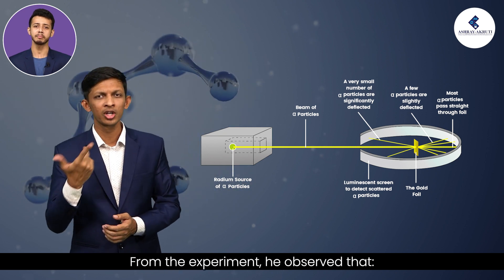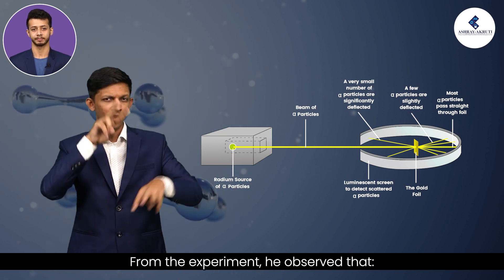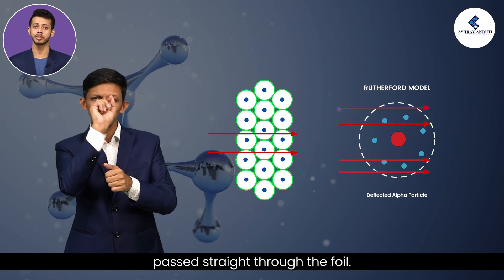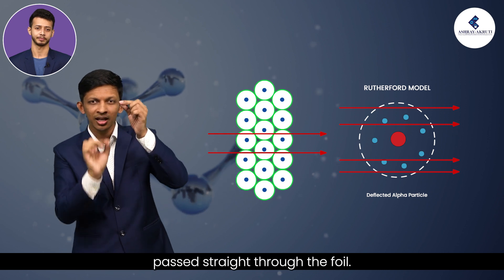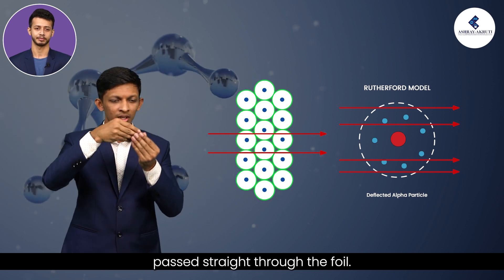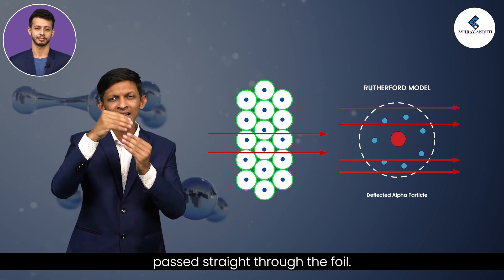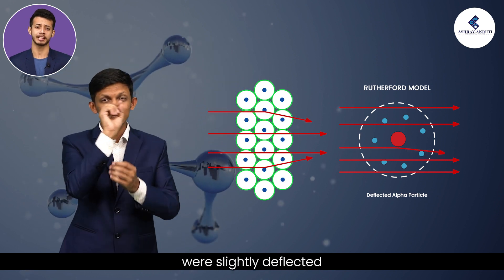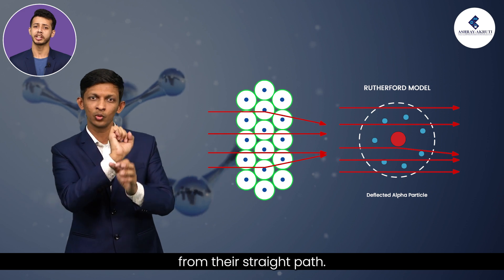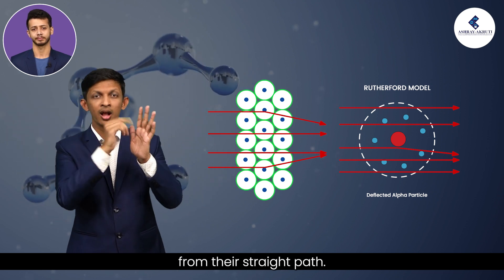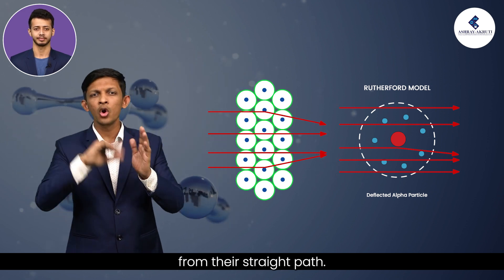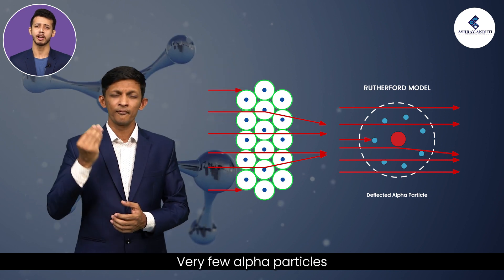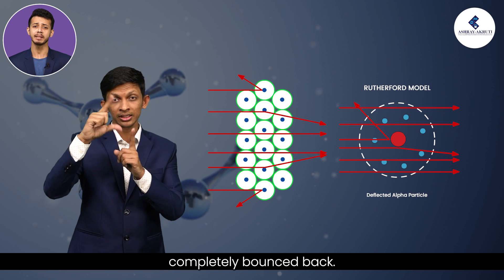From the experiment, he observed that most of the alpha particles passed straight through the foil. Some alpha particles were slightly deflected from their straight path. Very few alpha particles completely bounced back.